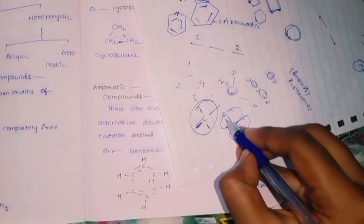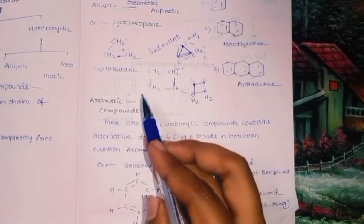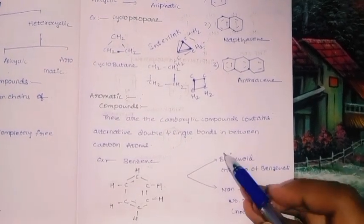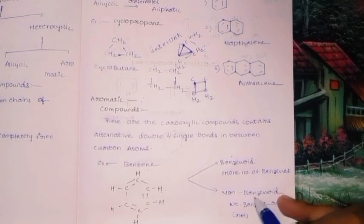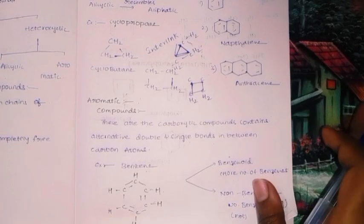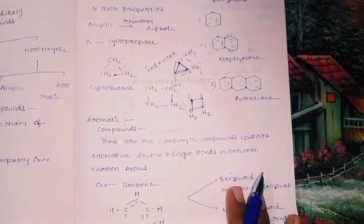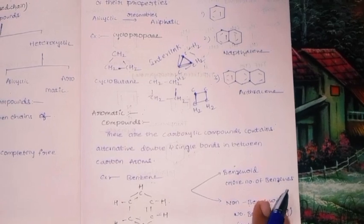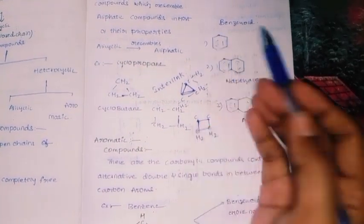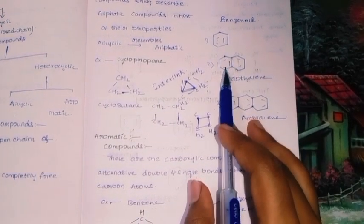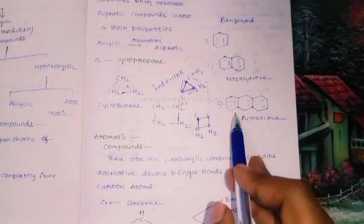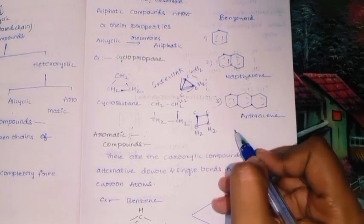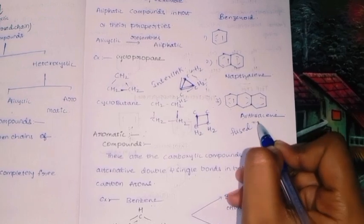Now, within aromatic homocyclic compounds, aromatic compounds are further divided into benzenoids and non-benzenoids. Benzenoid compounds contain more numbers of benzene rings. Non-benzenoids do not contain benzene rings. Examples of benzenoids: benzene, naphthalene (two benzene rings), and anthracene (three fused benzene rings). Remember these names.